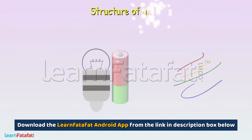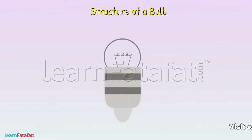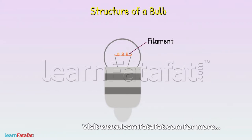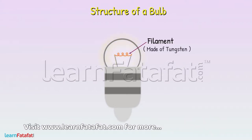Let's first discuss the structure of a bulb. There is a thin wire inside the bulb called a filament. It is made of tungsten and it produces light.